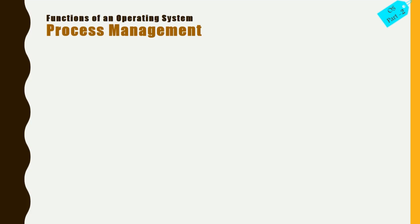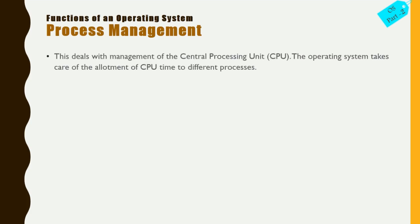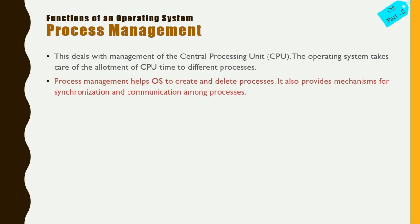Let's understand process management, which is one of the major functions of the operating system. Process management deals with the management of the CPU — that is the central processing unit. The operating system takes care of the allotment of CPU time to different processes. Process management helps the operating system to create and delete processes, and it also provides a mechanism for synchronization and communication among the processes.